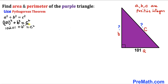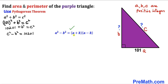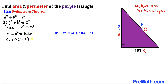Let's move b² to the other side, so we get c² − b² = 10,201. Now let's recall the famous identity: a² − b² = (a + b)(a − b). Applying it to the left-hand side gives us (c + b)(c − b) = 10,201.